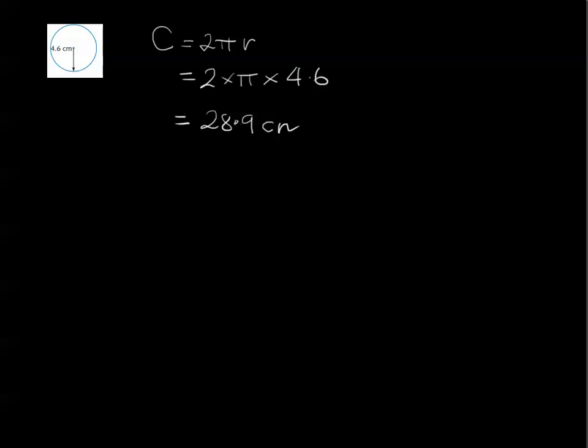What would we do if we had to do it the other way around? Here's a question. It says using the circumference, determine correct to one decimal place the diameter and the radius of each circle. Alright, well let's start with this one. Let's try this example here.